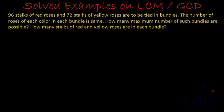So we have 96 red roses and 72 yellow roses, and we're trying to make bundles of red and yellow roses in such a way that the number of red roses in each bundle should be the same and the number of yellow roses in each bundle should be the same, and at the same time we're trying to make maximum such bundles.